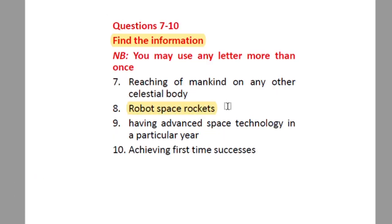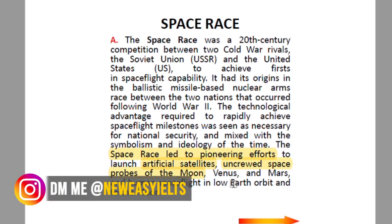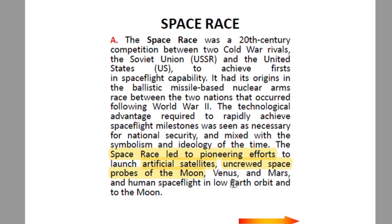Question eight: 'Robot space rockets.' In paragraph A, the last lines read: 'The Space Race led to pioneering efforts to launch artificial satellites, uncrewed space probes of the moon, Venus, and Mars.' 'Uncrewed' means without any humans — controlled by human commands but without direct human involvement, essentially robots. So the answer is paragraph A.